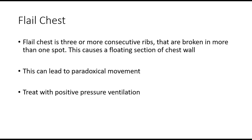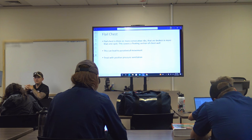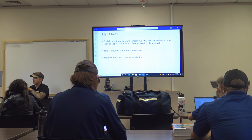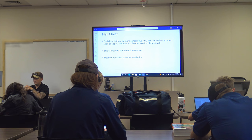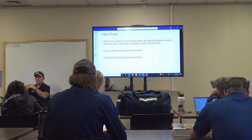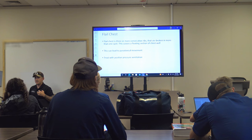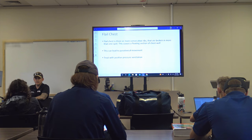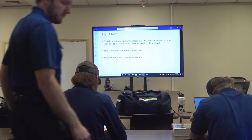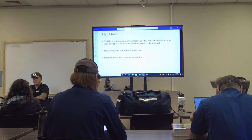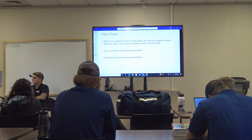Flail chest — remember this definition: three or more consecutive ribs broken in more than one spot. This causes a floating section of chest wall and paradoxical movement, where one side of the chest moves in while the other moves out — opposite of each other. Unilateral is one side rising while the other isn't moving; paradoxical is opposite movement. Treatment is positive pressure ventilation with a BVM. Note: the book says two or more ribs, but on the National Registry exam it's always been three or more.